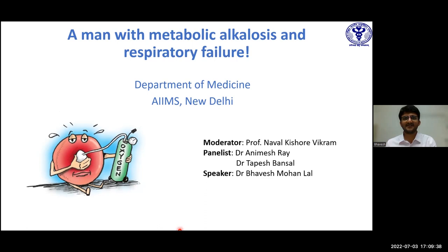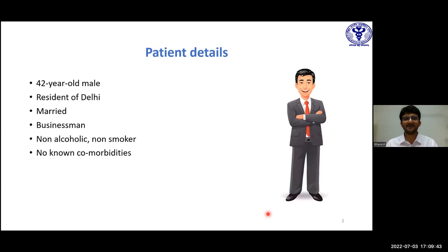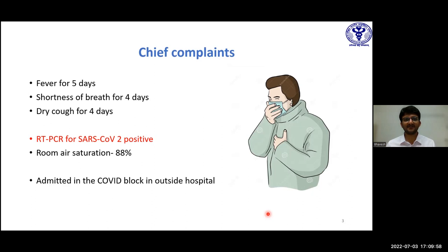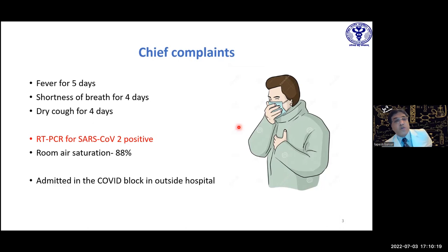Our patient is a 42-year-old male, resident of Delhi, married, businessman by occupation, non-alcoholic, non-smoker with no known comorbidities. He presented with five days of fever and four days of shortness of breath and dry cough to an outside hospital. With an initial suspicion of pneumonia, the patient was evaluated and found to have a positive RT-PCR test for SARS-CoV-2. His room air saturation at presentation was 88%, and a diagnosis of COVID-19 was made.